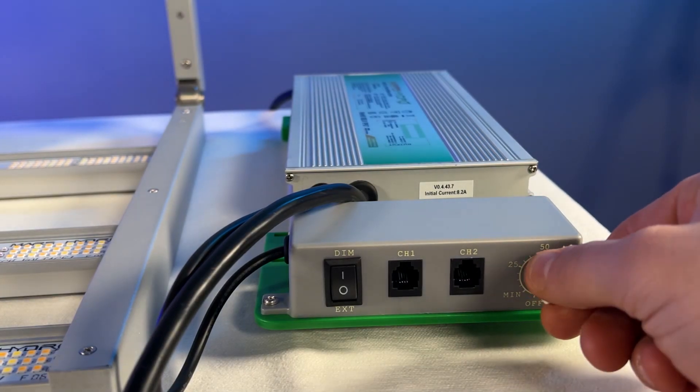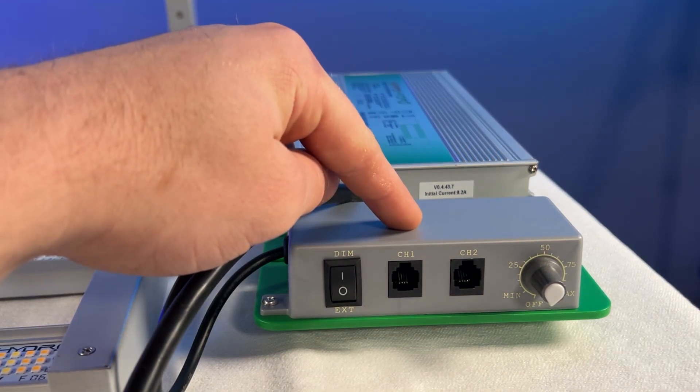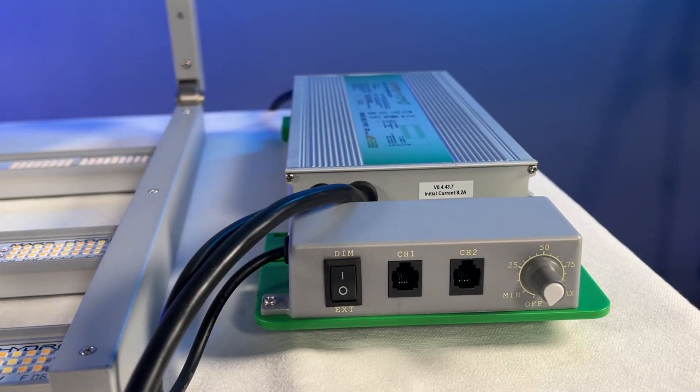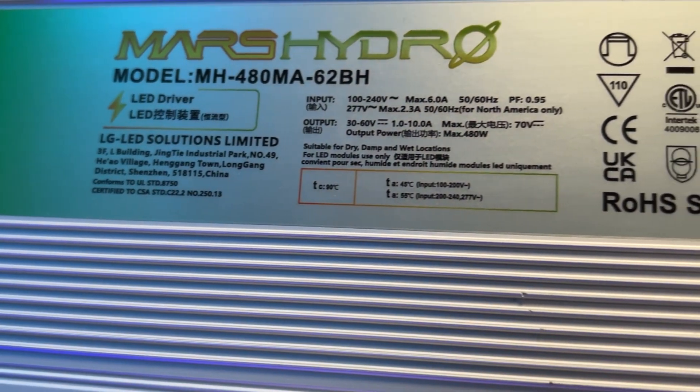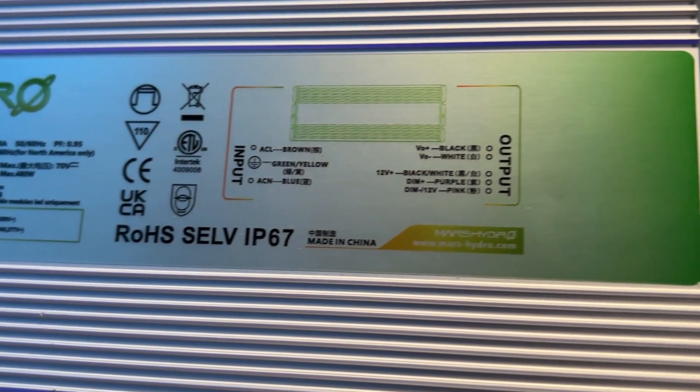Taking a quick peek at the driver, you have the switch for either your dimming setting or your external setting. So if you're using a controller, it's dimmable anywhere between 10% and 100%. And a couple of channel ports. This way you can daisy chain more lights together and you can do up to 30 fixtures.